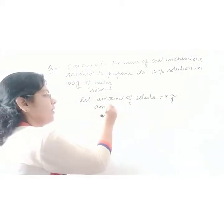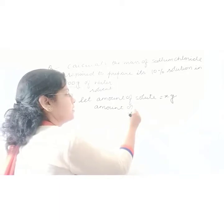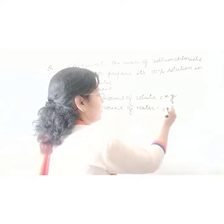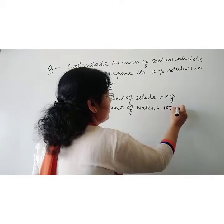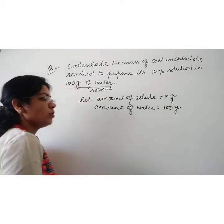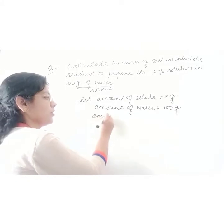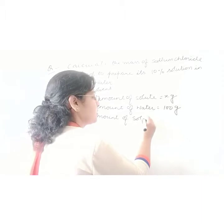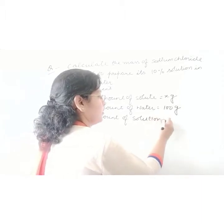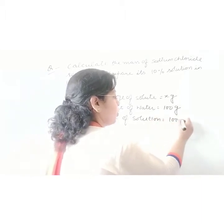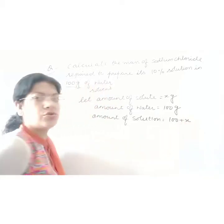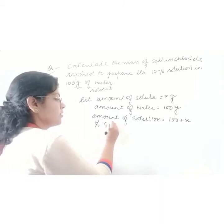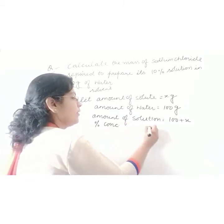The amount of solvent is given to us, that is the amount of water — water is the solvent — which is 100 grams. So the total amount of solution becomes 100 plus X, that is solvent plus solute. Also, the percentage is given to us, that is 10%.